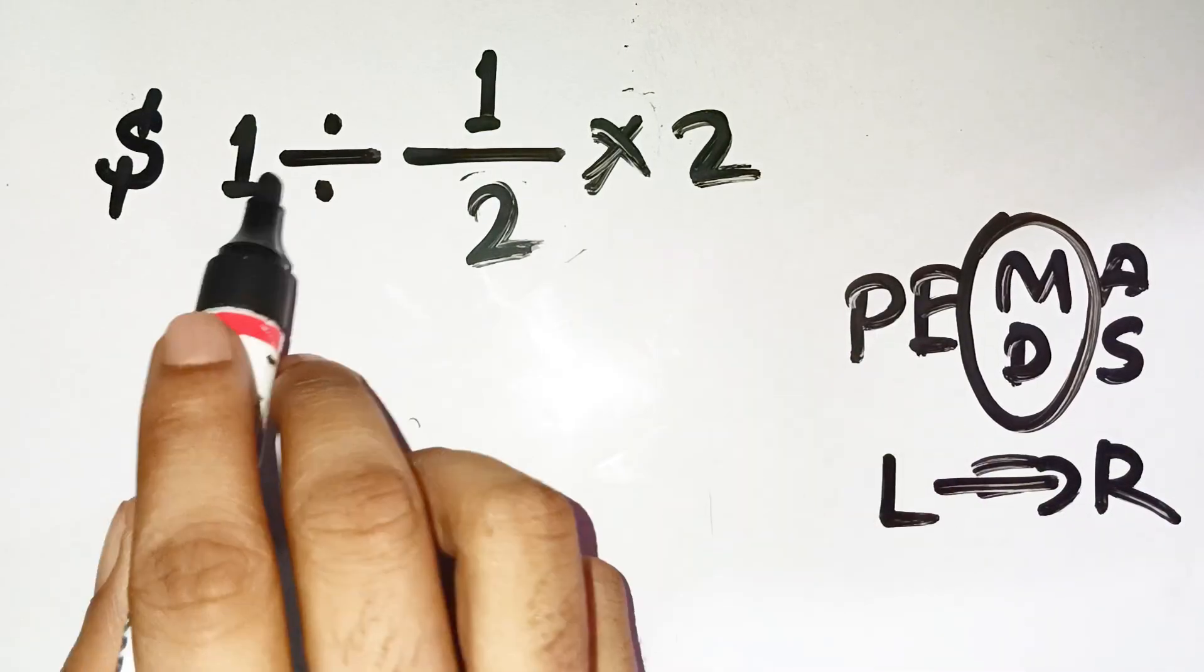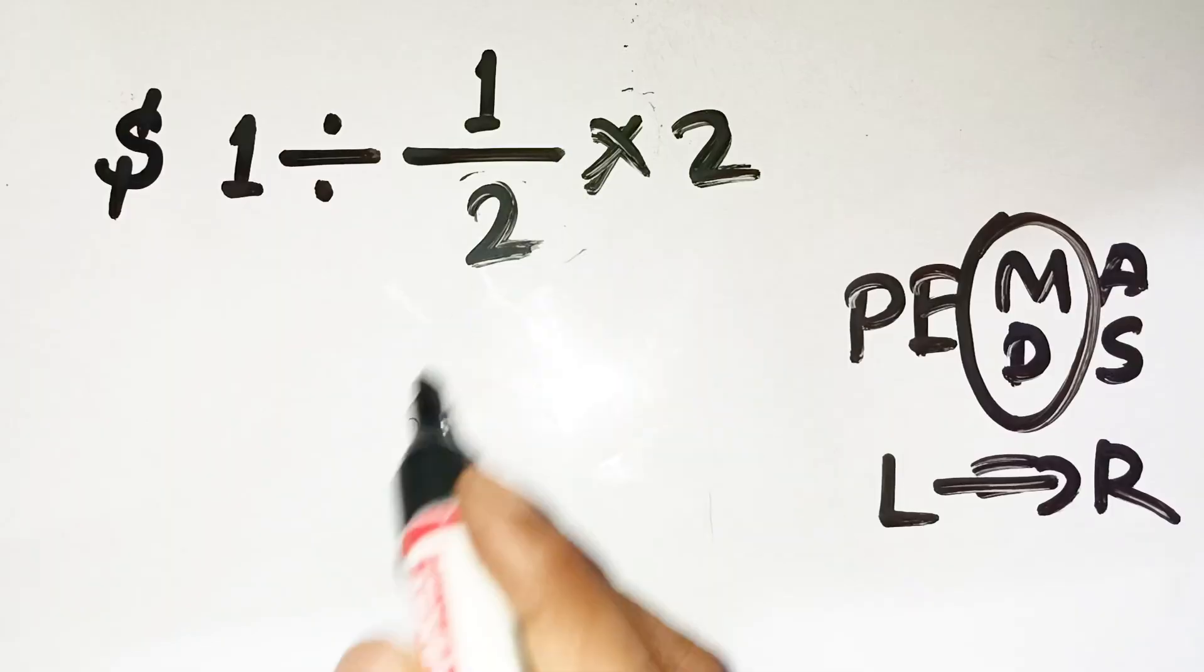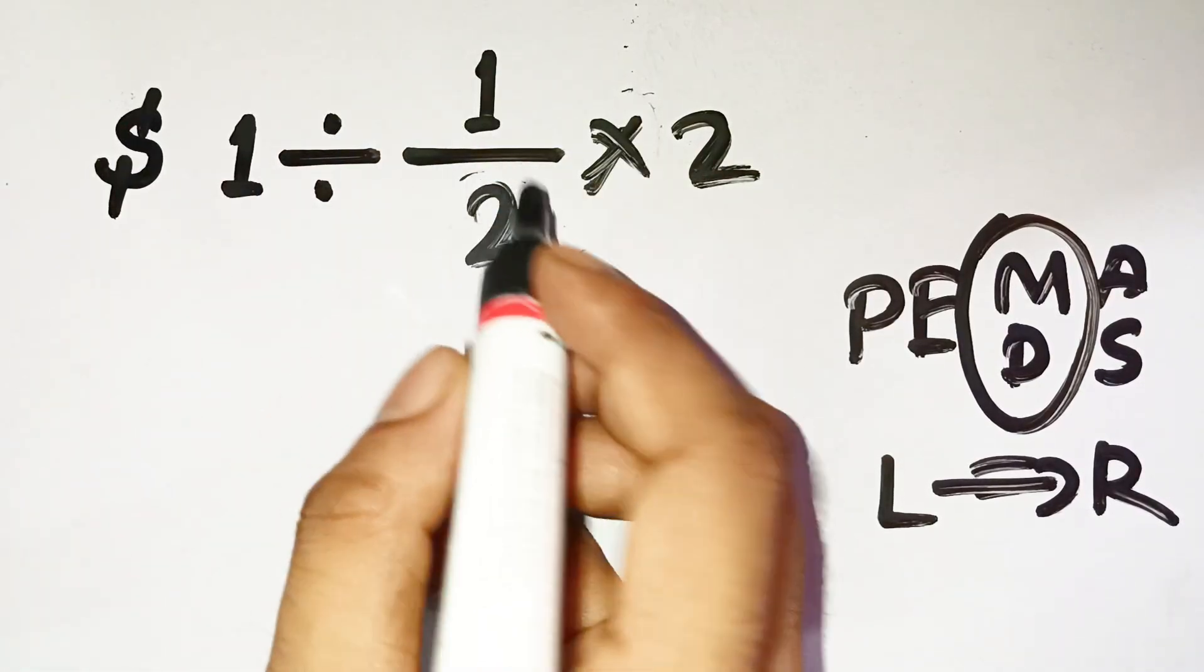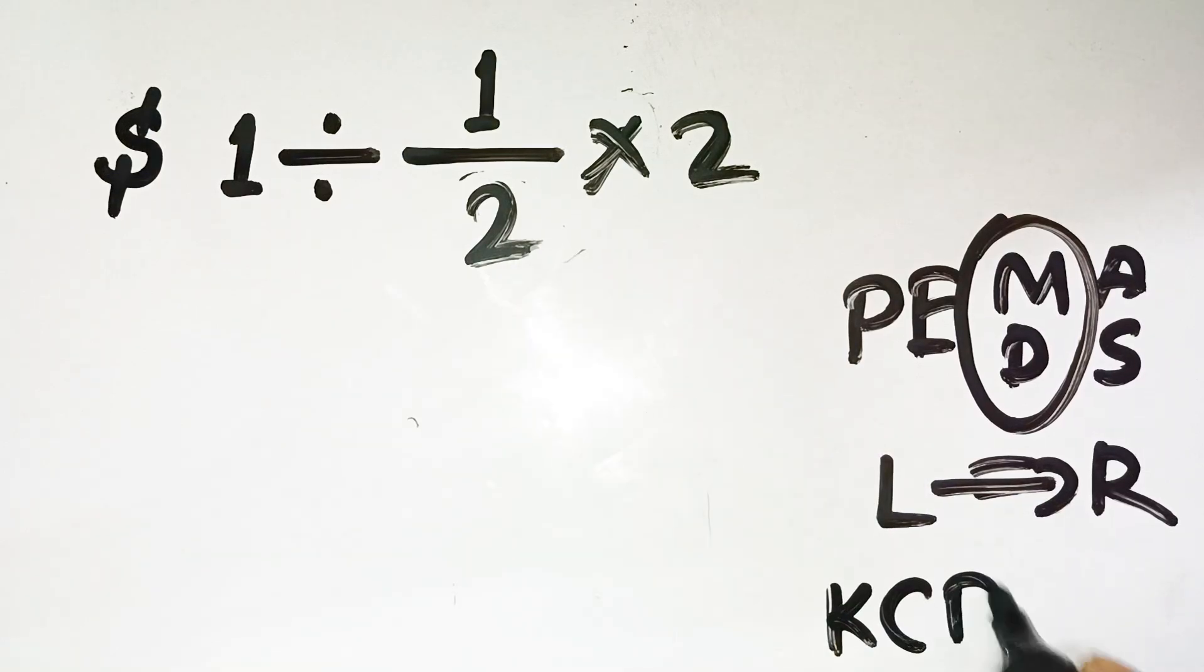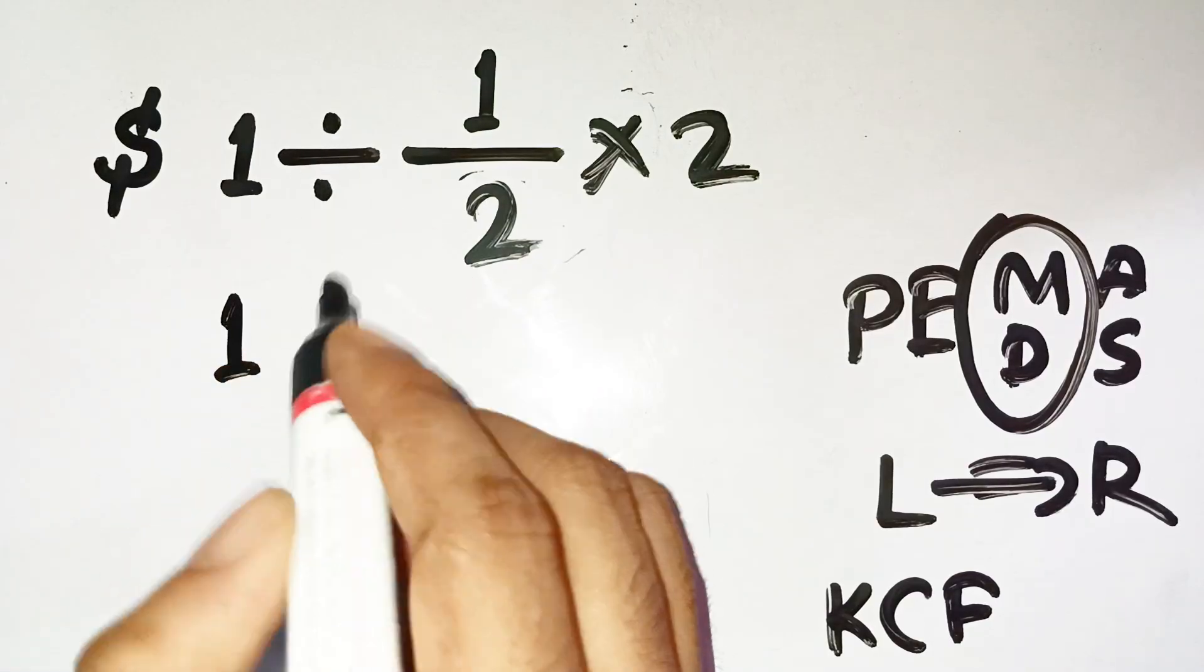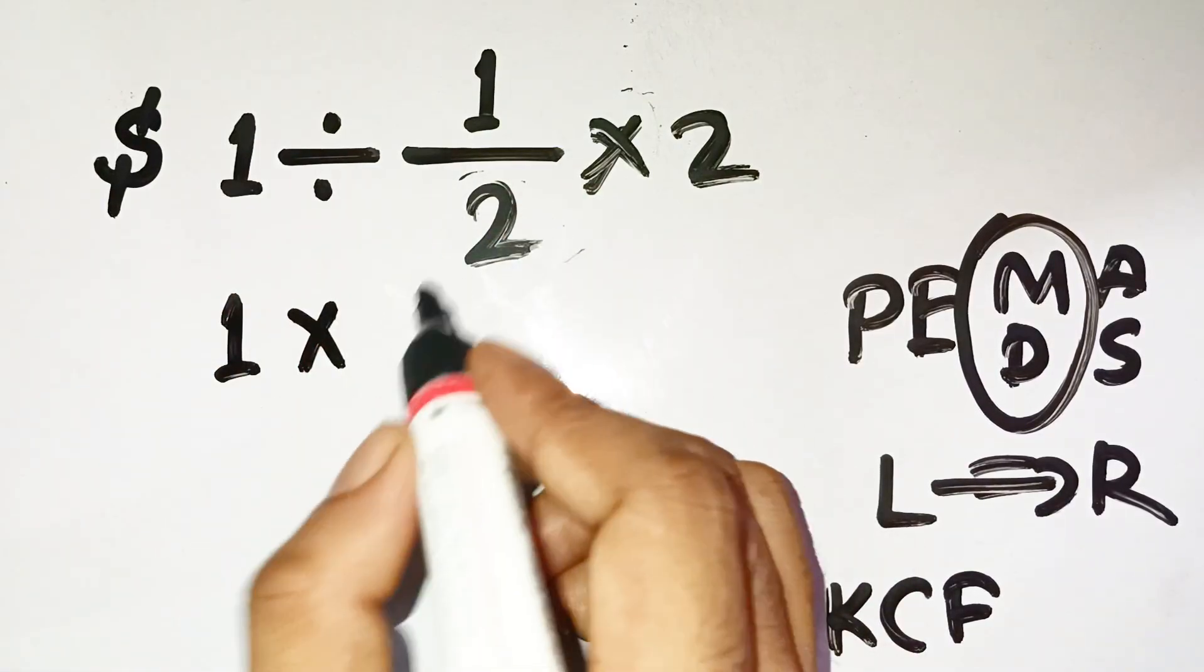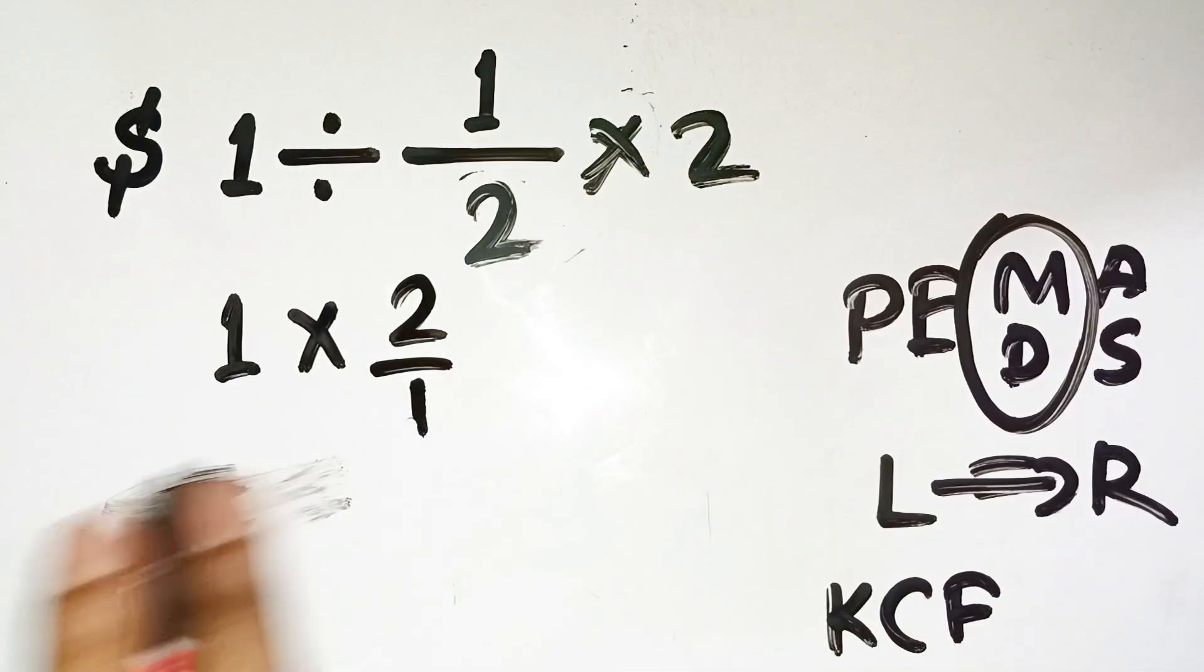So in 1 ÷ 1/2 × 2, the first thing we hit going left to right is 1 ÷ 1/2. Now, dividing by a fraction is the same as multiplying by its reciprocal. That's the KCF rule: Keep, Change, Flip. We keep the first number, 1. We change the division sign to multiplication, and we flip 1/2 to 2/1. So now we've got 1 × 2/1, which equals 2.